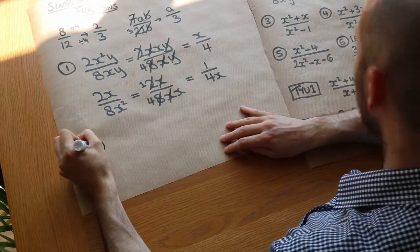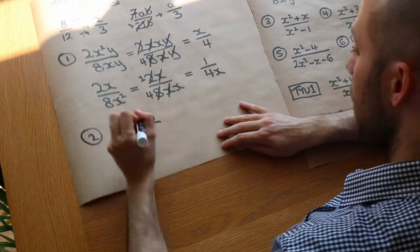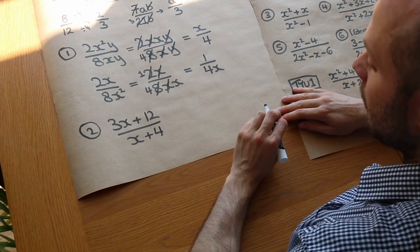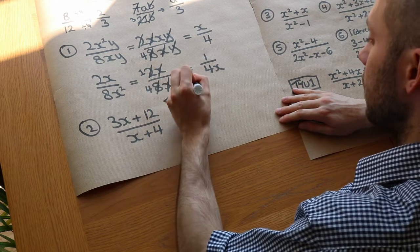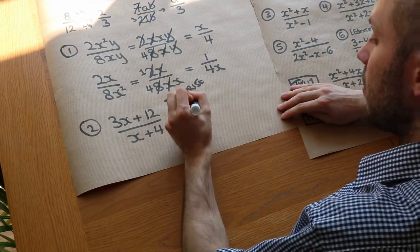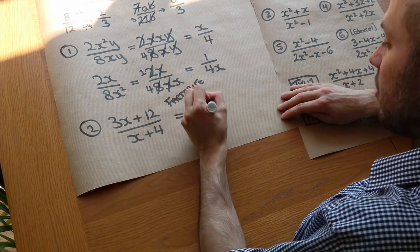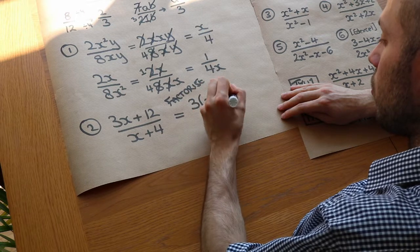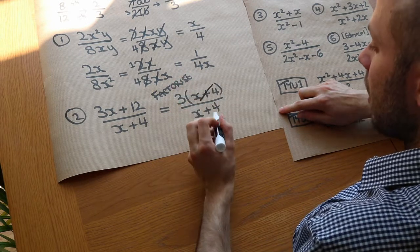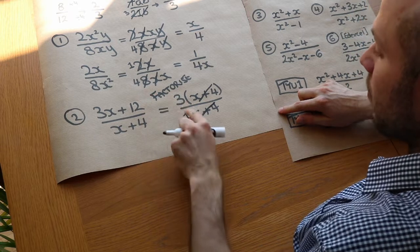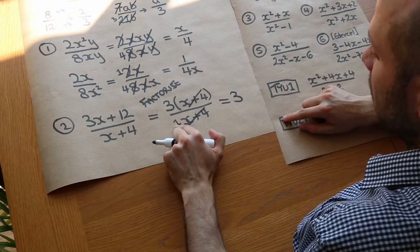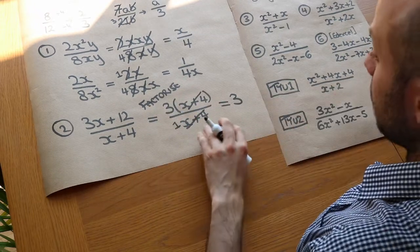Now let's do the second question: we've got 3x plus 12 over x plus 4. With many of these simplifying algebraic fraction questions you need to factorise the top and the bottom first. So how do we factorise the top? We've got a common factor of 3, so we can factorise out the 3 to get 3 times (x plus 4). Then we've got a common factor of (x plus 4), so we can cross that out — and remember, there's nothing left, so you just put a 1 there — giving us 3 over 1, which is just 3.